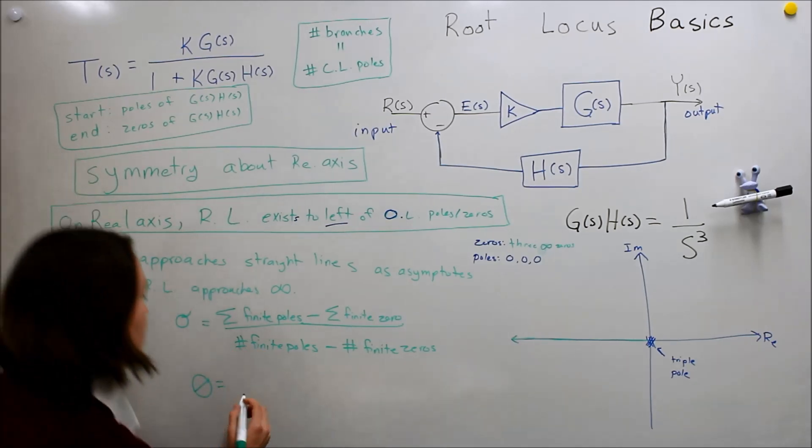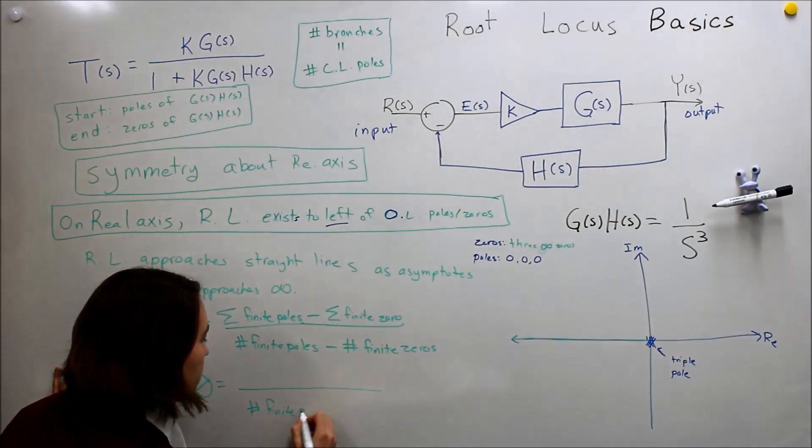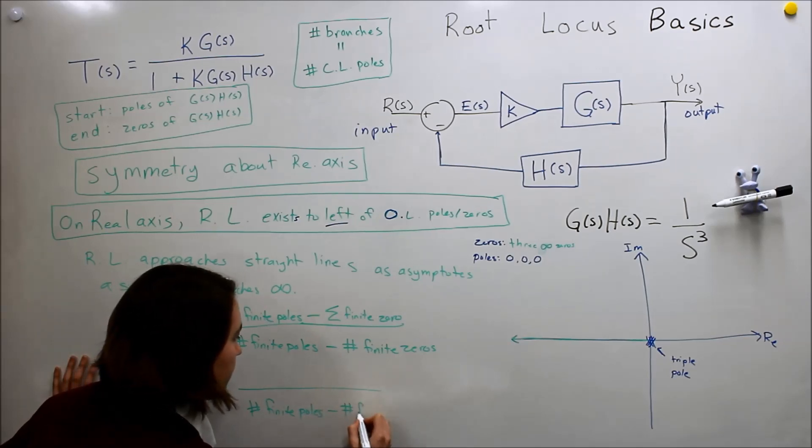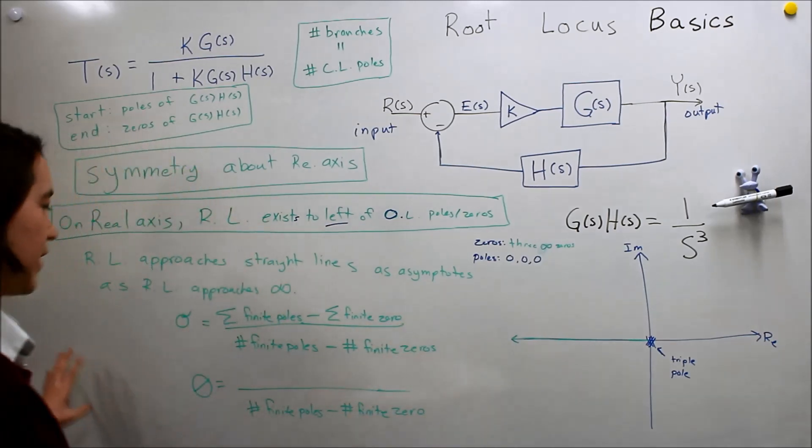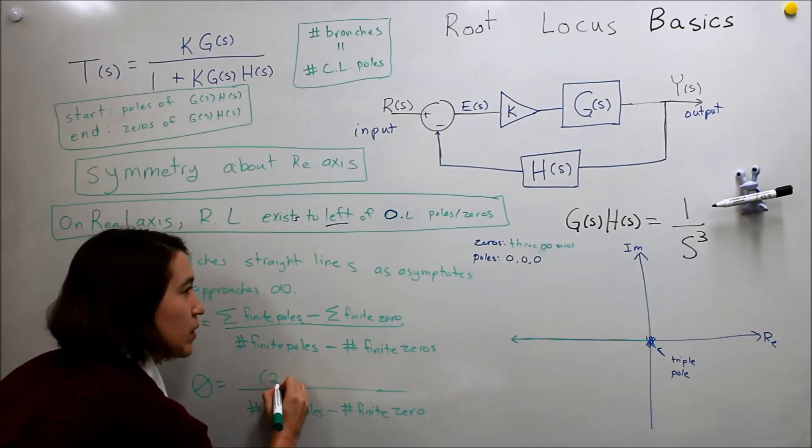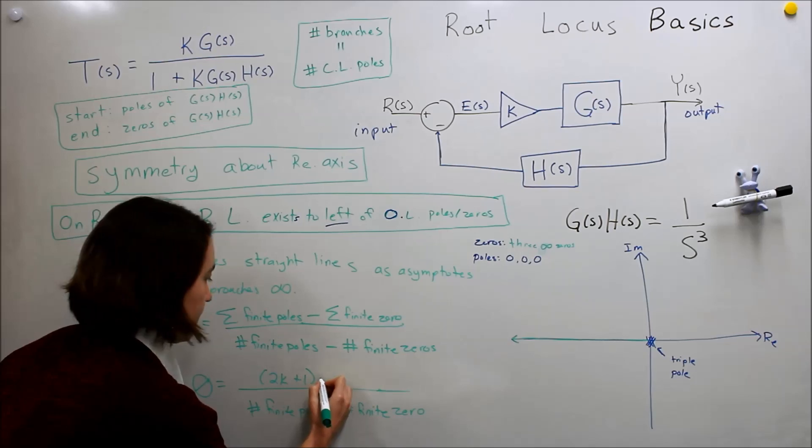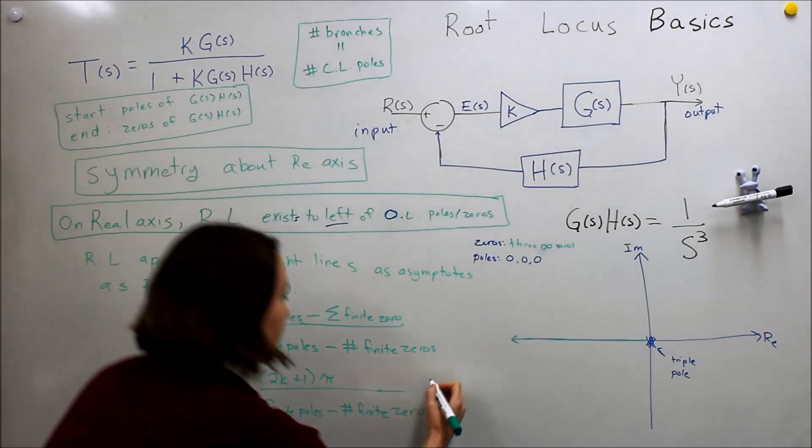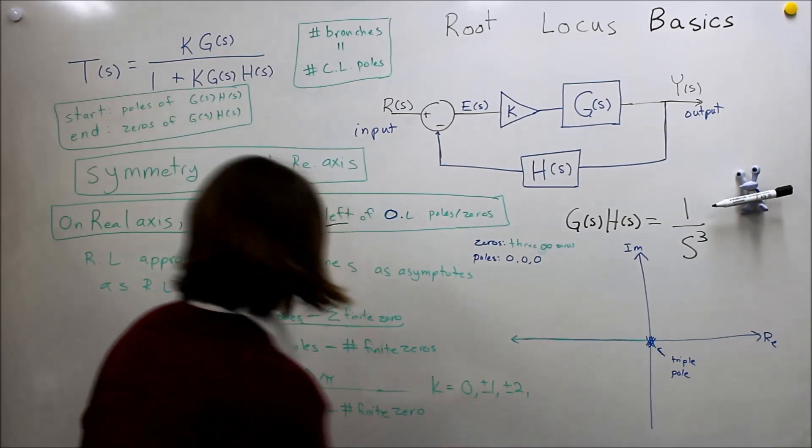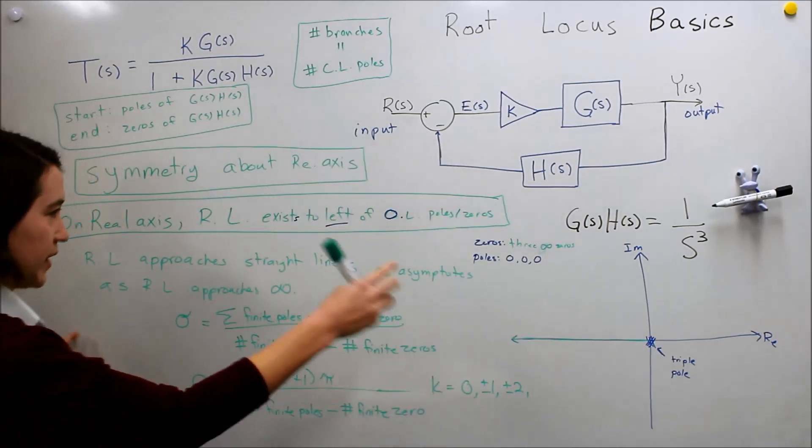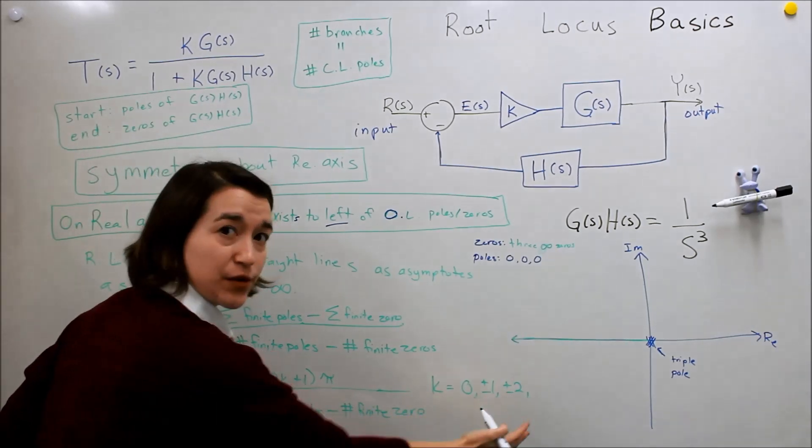So we also have a definition for the angle of that split off. We're going to call it theta. And the denominator is actually the same as this one. So let's write again, number of finite poles minus the number of finite zeros. And in the numerator, it's actually a fixed expression. It's two K plus one times pi, where K is equal to zero, plus or minus one, plus or minus two. And so because these are the angles, they're going to go all around. And it turns out they'll start repeating after a certain point.